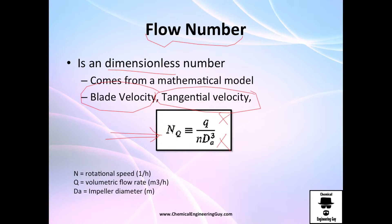Here goes the formula. You've got the flow number is equivalent to that of the volumetric flow rate divided by the rotational speed and the impeller diameter to the third power.